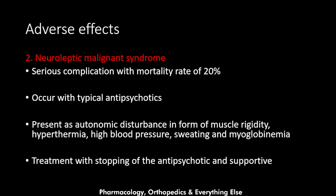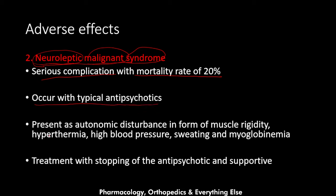Neuroleptic malignant syndrome is a serious complication of antipsychotic drugs with a mortality rate of 20%. It occurs more with typical antipsychotics and presents as autonomic disturbance in the form of muscle rigidity, hyperthermia, high blood pressure, sweating, and myoglobinemia. When patients develop these symptoms, antipsychotic treatment should be stopped and supportive treatment initiated.